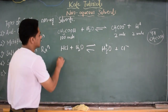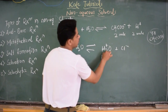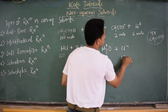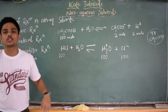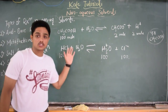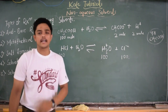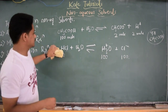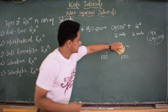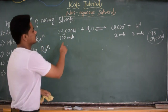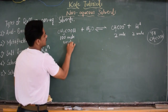In contrast, HCl is a strong acid. If there are 100 moles of HCl, it completely dissociates to give 100 moles of H₃O⁺ and 100 moles of Cl⁻. Because it completely dissociates, it is a strong electrolyte, and due to the greater number of H⁺ ions produced, it is a strong acid — as we learned in our junior classes.